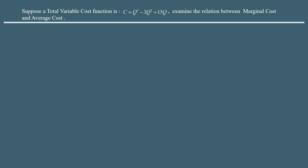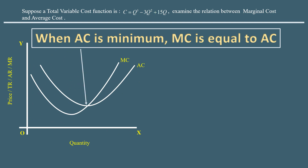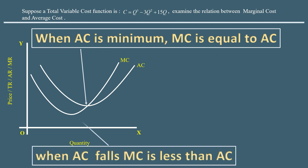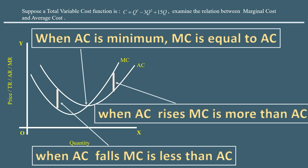We know the three relations are: when average cost is minimum, marginal cost is equal to average cost; when average cost falls, marginal cost is less than average cost; and when average cost rises, marginal cost is more than average cost. To examine the relation, we need the average cost and marginal cost functions.